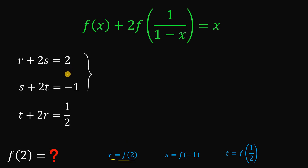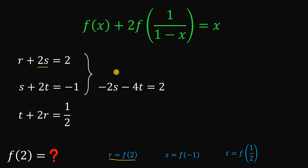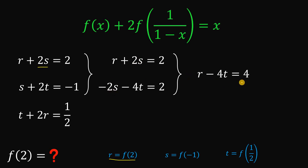Using the first two equations, we want to eliminate the positive 2s. So let's multiply the second equation by negative 2. If we do that, we have negative 2s minus 4t equals 2. Copy the first equation and add the two equations — the positive 2s and negative 2s cancel out. So we have r minus 4t equals 4.